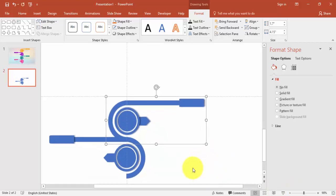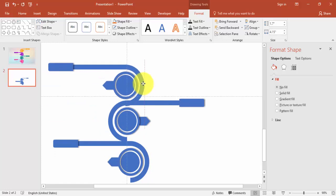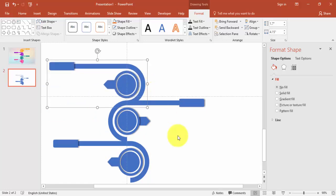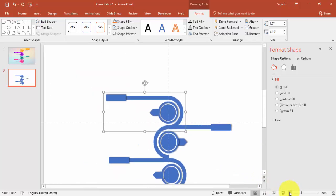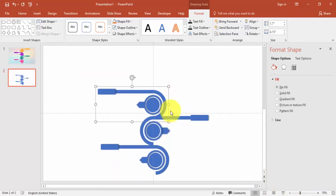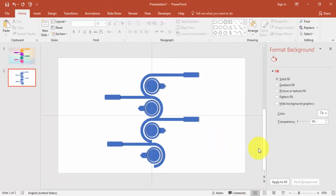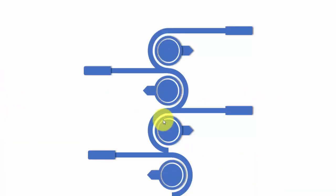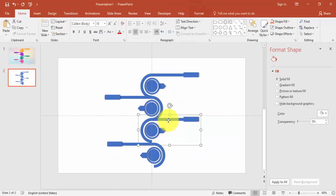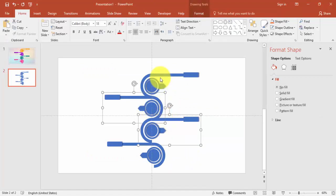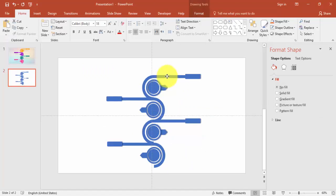Select this one, press Ctrl+D, and align it. Then the last one — press Ctrl+D and align it. So now we have almost done the shape. This one has gone up, let me just bring this down.